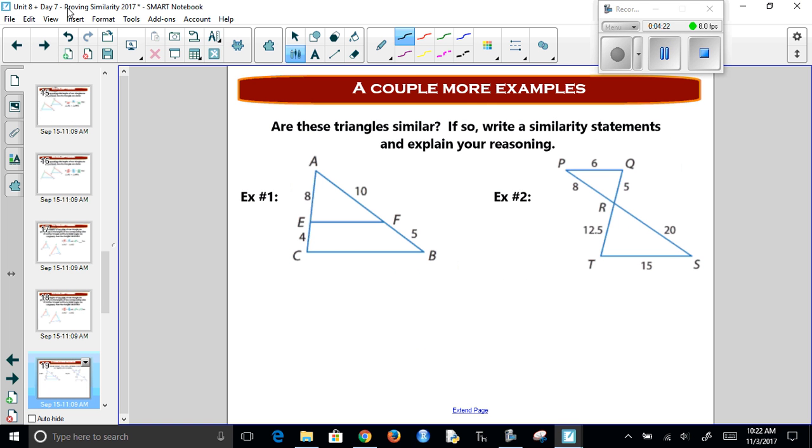So if we look at these couple examples, these are 3 and 4 in your packet. If I have this big triangle and this small triangle, we would do 8 over 12. Does that equal 10 over 15? Well, this one's 2 thirds. That one's 2 thirds. So they're all equal 2 thirds. So that's true.